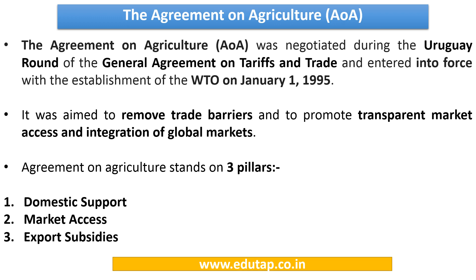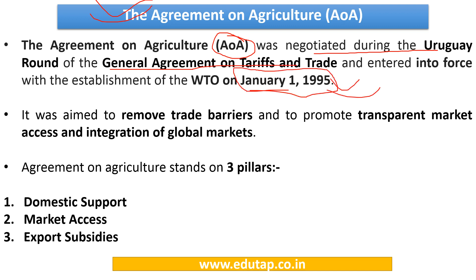In this presentation, WTO's Agreement on Agriculture will be discussed in detail. WTO's Agreement on Agriculture was negotiated during the last round of multilateral trade negotiations held under GATT and came into force on 1st January 1995. The agreement is based on 3 pillars: Domestic Support, Market Access, and Export Subsidies, with the aim of removing trade barriers and promoting transparent market access.